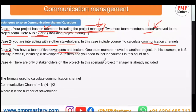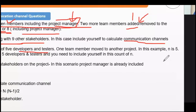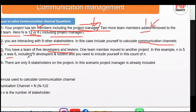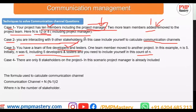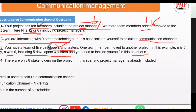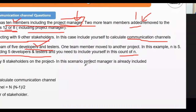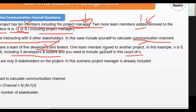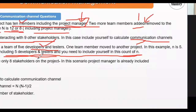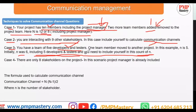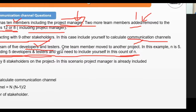Case three: you have a team of five developers and one tester, and one team member moves to another project, so n becomes five. Initially n was six — five developers and one tester — but you also need to include yourself as the project manager, making it six. After one member leaves, n is five. Whenever the question mentions your team of developers and testers, add yourself to that count.